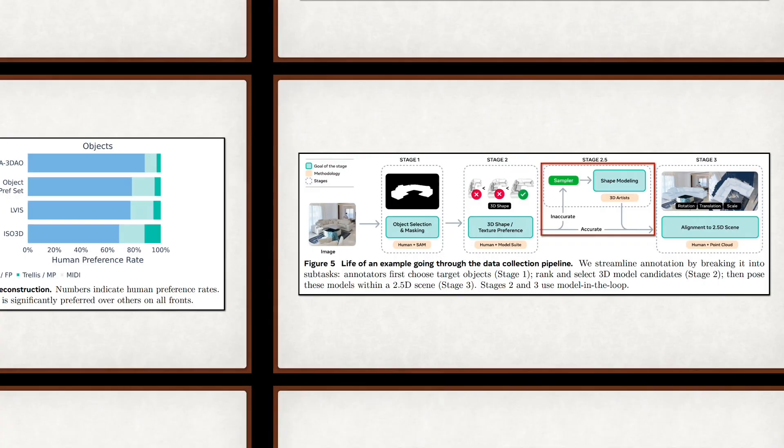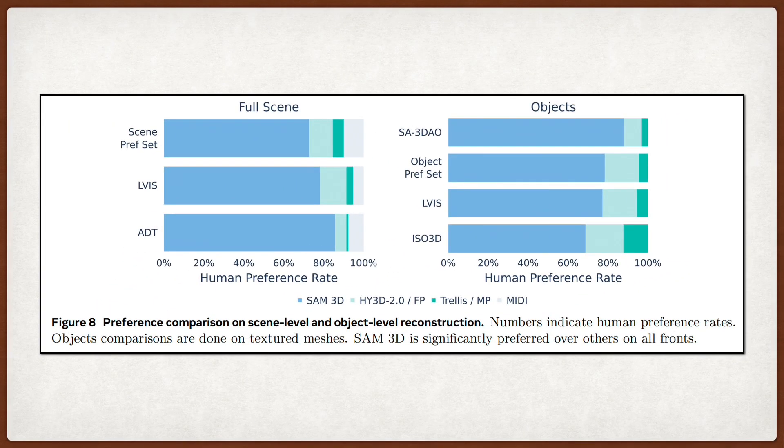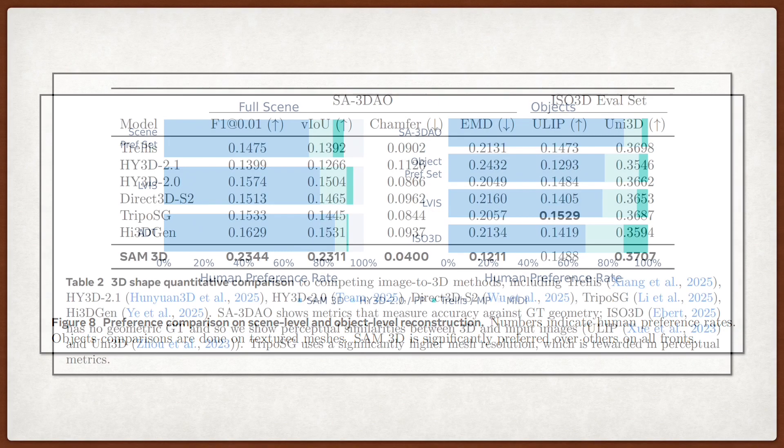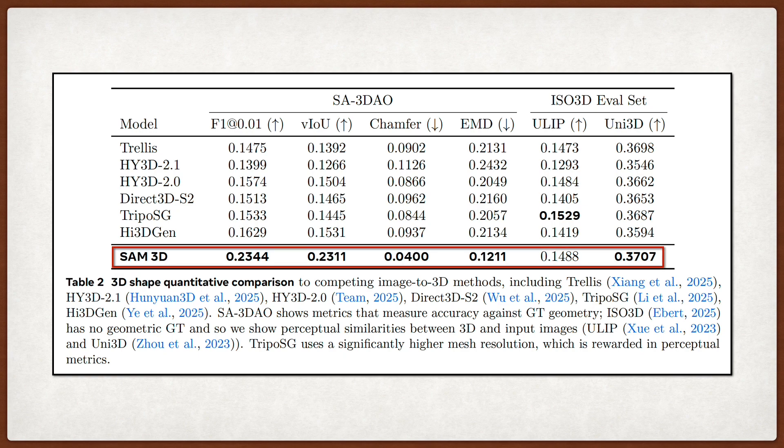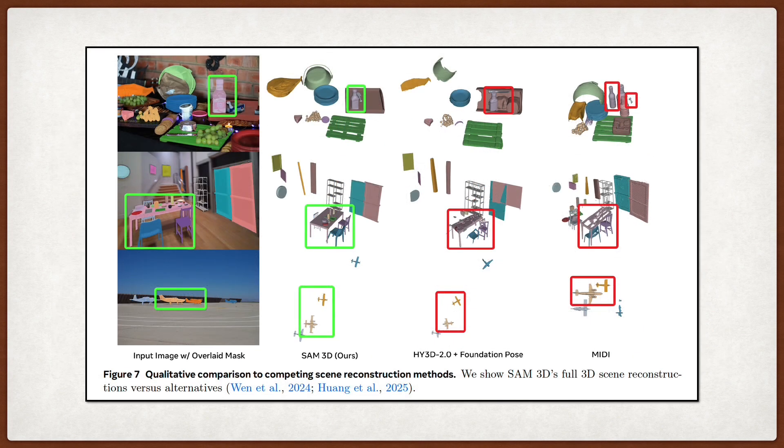In terms of results, they evaluate this on a new benchmark they collected, called SA-3DAO, which consists of artist-created meshes for real-world images. The quantitative metrics show that SAM-3D significantly outperforms recent baselines, like Trellis and Hunyuan-3D, especially on metrics like volume IOU and chamfer distance. Qualitatively, the reconstructions look much more consistent with the input image, especially in terms of handling occlusions, where other models tend to just produce broken geometry, or floaters.